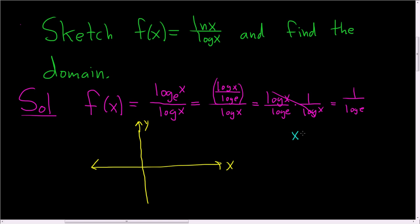Now we also know that x has to be positive because negative numbers and 0 do not lie in the domain of natural log of x or log x. So x must be positive. Also, x can't be 1 because if you plug in 1, you end up with the natural log of 1 over the log of 1, which is 0 over 0, which is undefined.